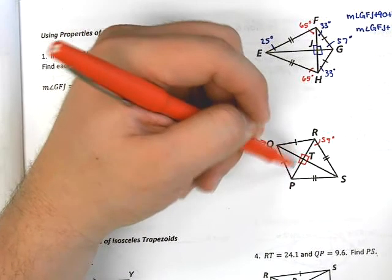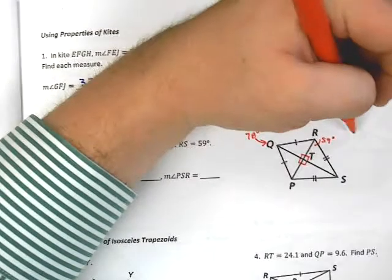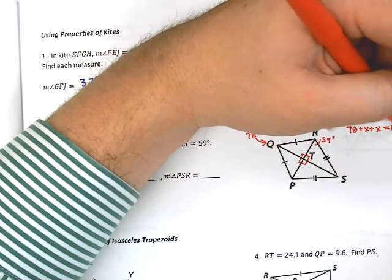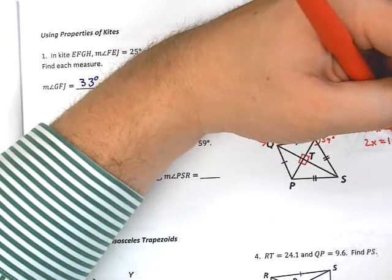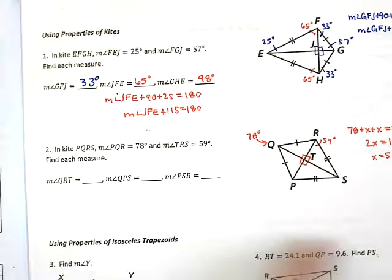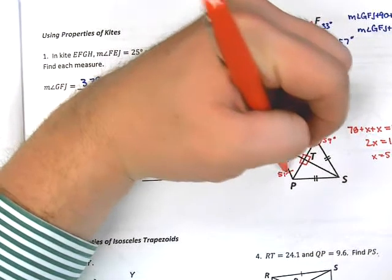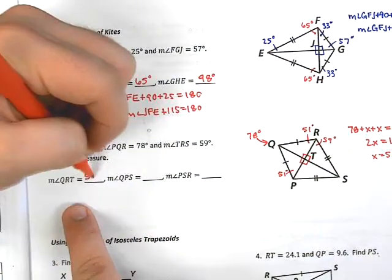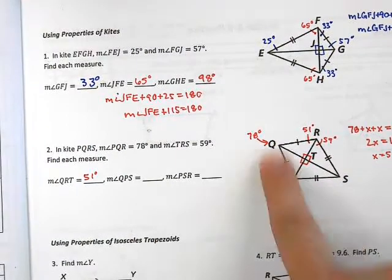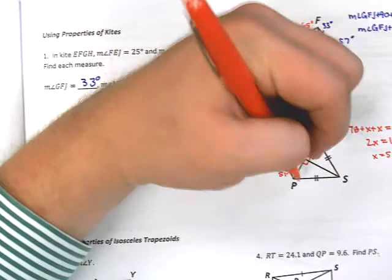And because I know this top angle up here, well, I can get what both of the measures are here of this angle up at R and this one at P. Right? I know that 78 plus x plus x must equal 180, or 2x must equal 102, or x must equal 51 degrees. Alright? So, now I know that right here is 51 and 51. And I can mark it. QPS.